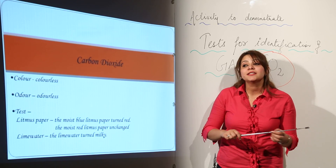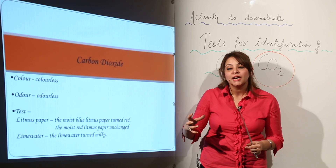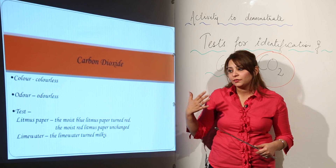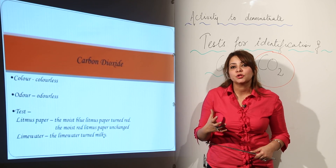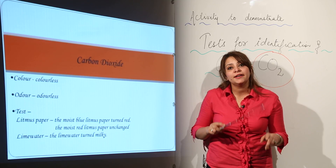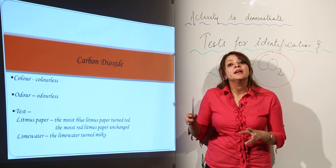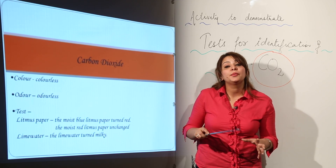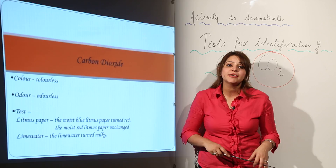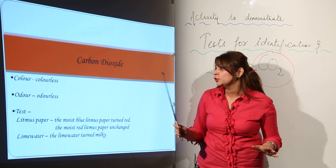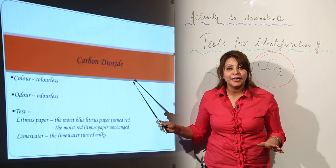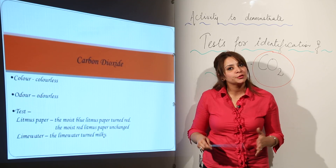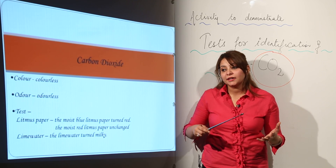Carbon dioxide is used in fire extinguishers installed in buildings. When there is a fire, inside the fire extinguisher there is sulfuric acid and baking soda. When the knob is pressed they react with each other and liberate CO₂. CO₂ extinguishes fire because it is a non-supporter of combustion — it forms a protective layer, cuts off the oxygen supply, and hence extinguishes the fire.